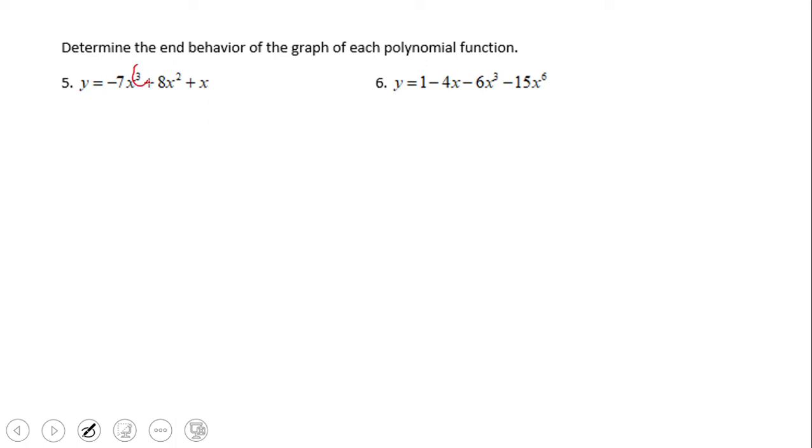We notice we have an exponent of three, which is odd, and the leading coefficient of negative seven, which is negative. These two things tell us the end behavior of this polynomial, which is going to be left up, right down. You can hear it also like this: up, down.